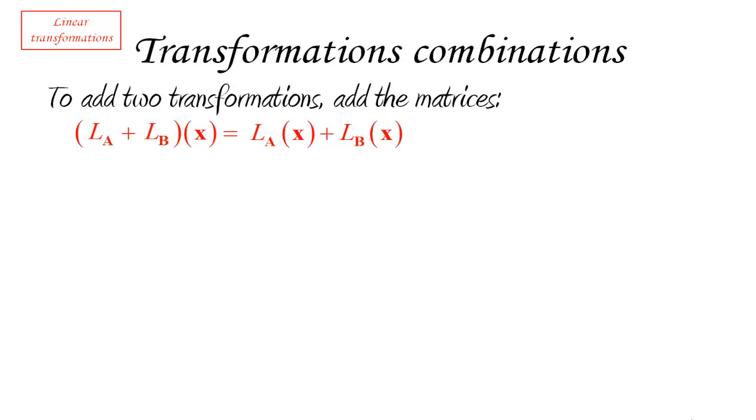But now let's see what is the definition of these two new vectors. Remember, how do we compute LAX? We multiply A by X. And how do we compute LBX? We multiply B by X. Therefore, what we end up with is AX plus BX.